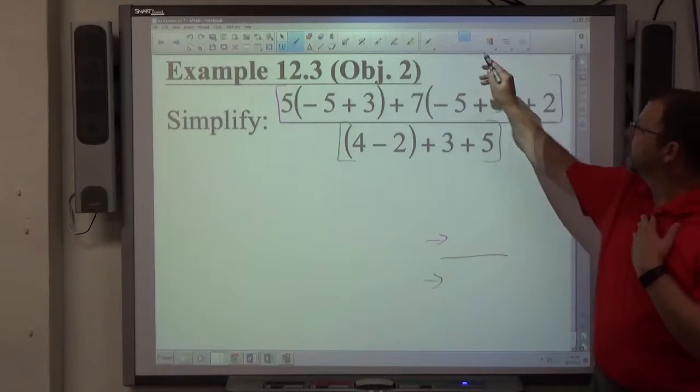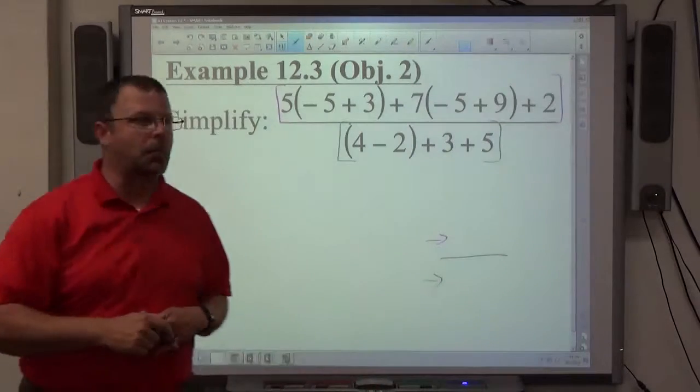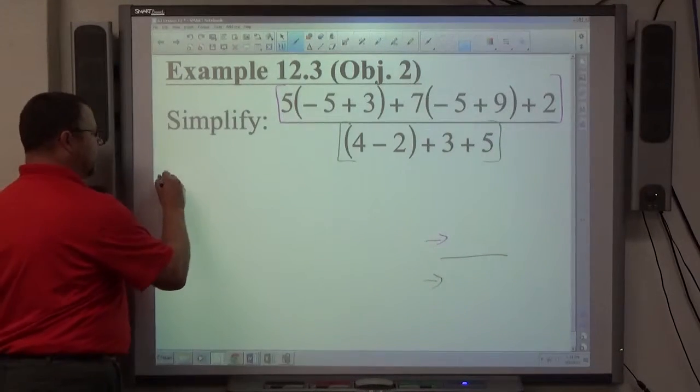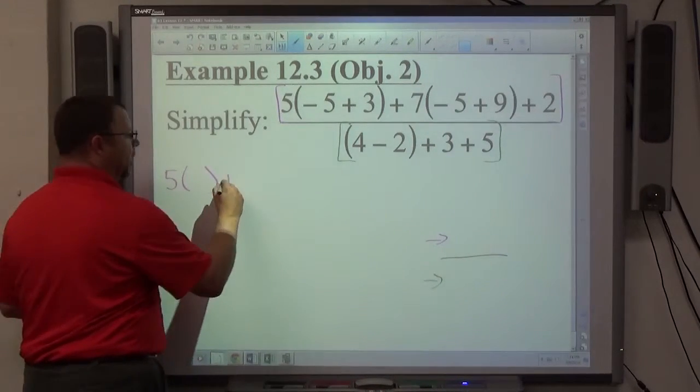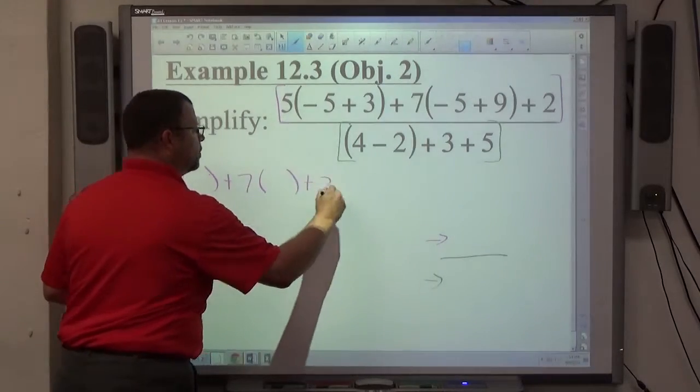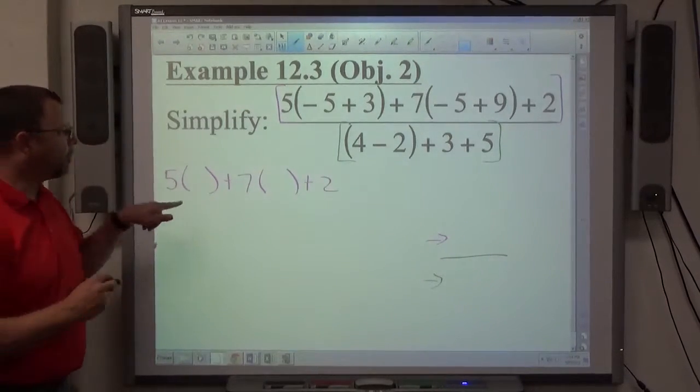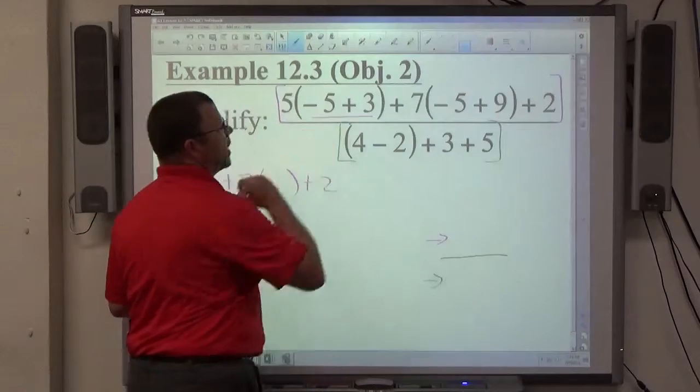What I personally do with this problem is I take the top and bottom as separate problems. So the top is 5 parentheses plus 7 parentheses plus 2. In the parentheses, I want to evaluate this stuff. What's negative 5 plus 3?